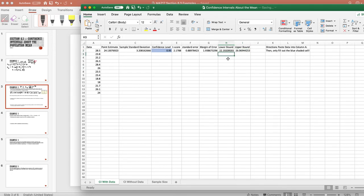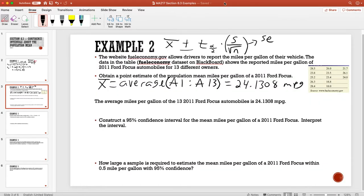The lower bound is 22.1921 and the upper bound is 26.0694. So the lower bound is 22.1921 while the upper bound is 26.0694.